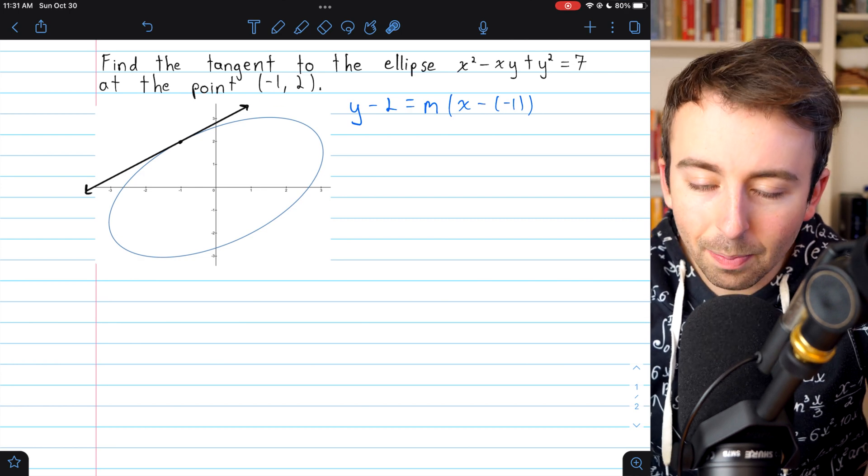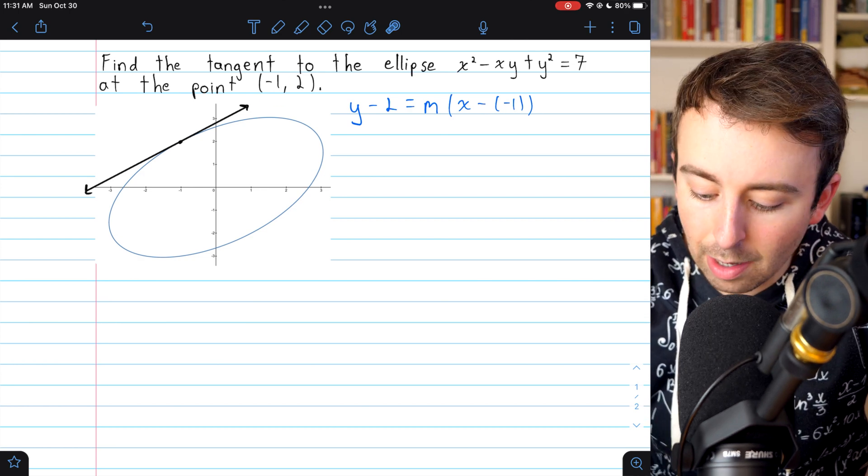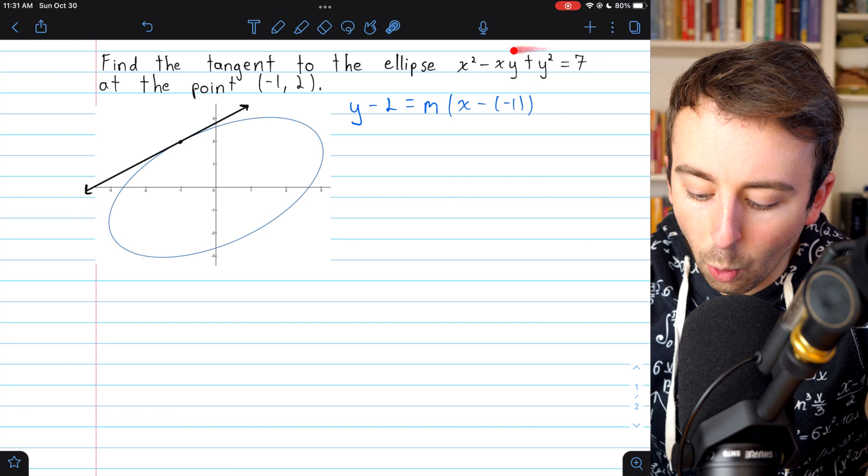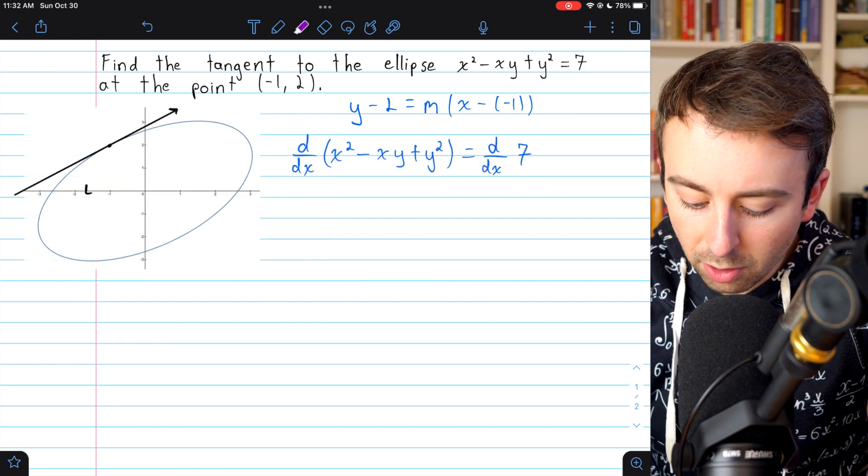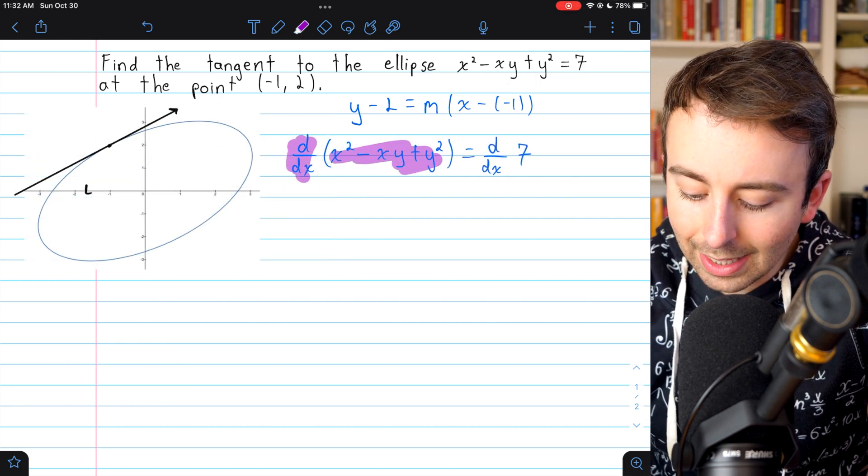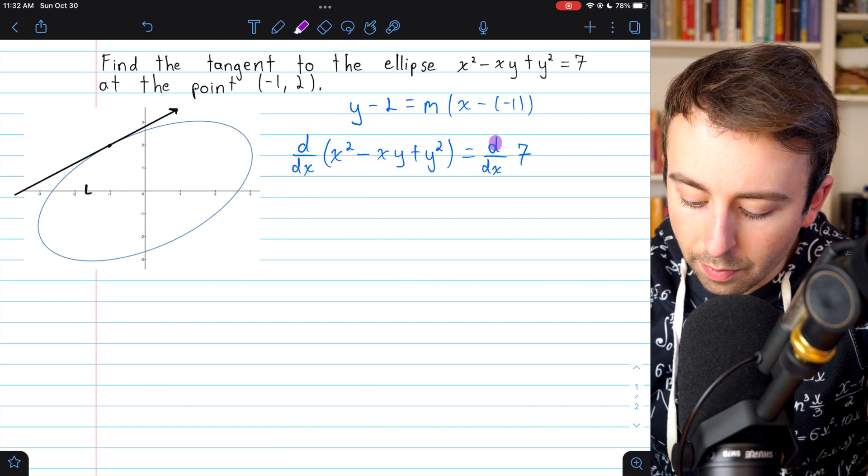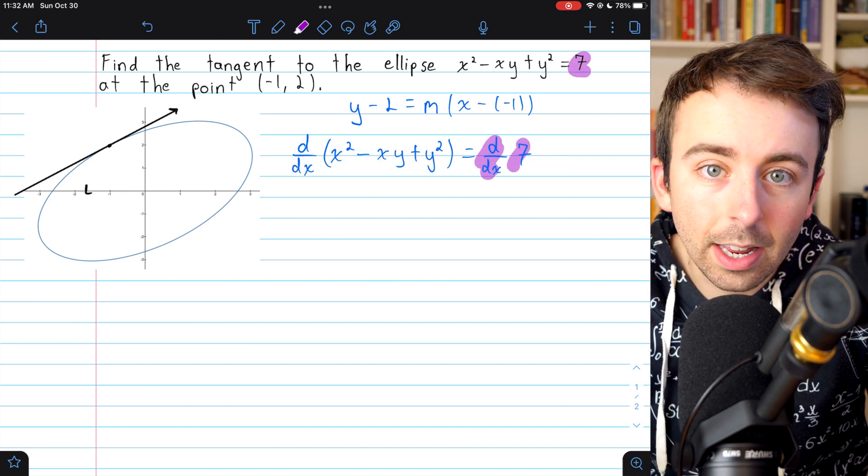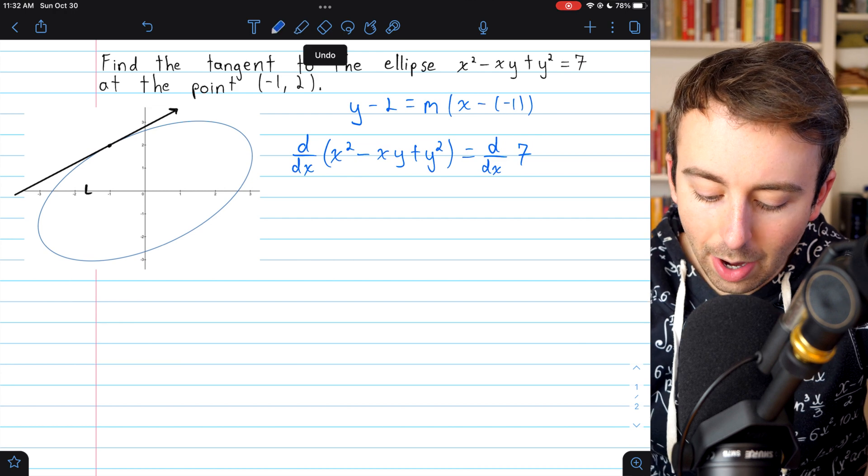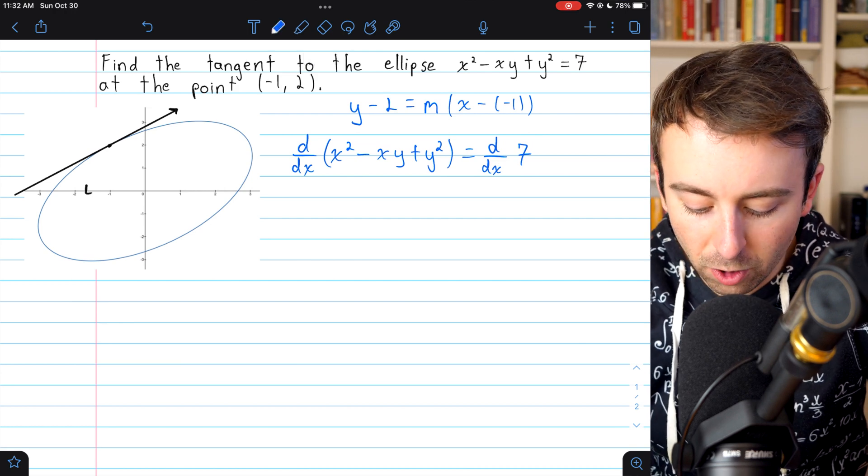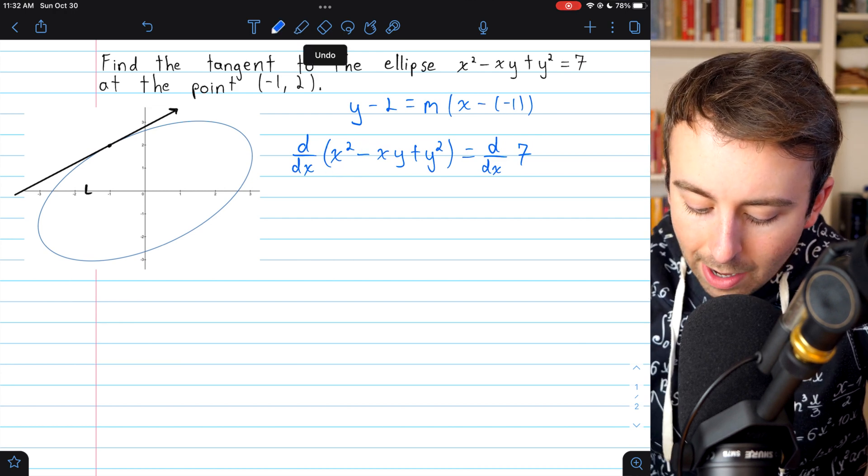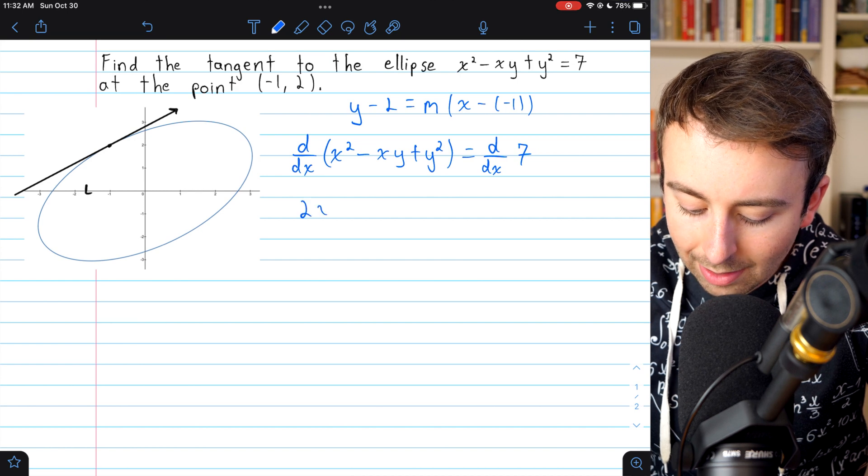So we'll have to do implicit differentiation on this equation. To begin that process, we take the derivative of the left side of the equation and the derivative of the right side of the equation. So let's go ahead and proceed with this computation. The derivative of x² is just power rule, that's 2x.